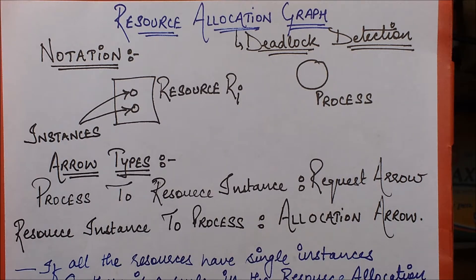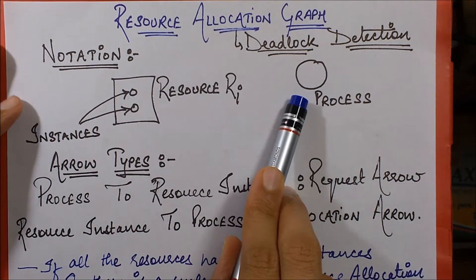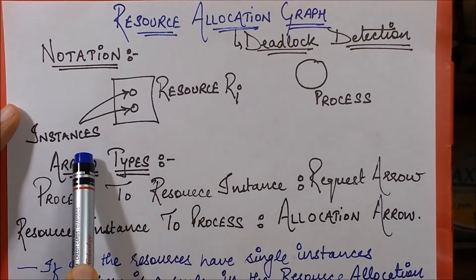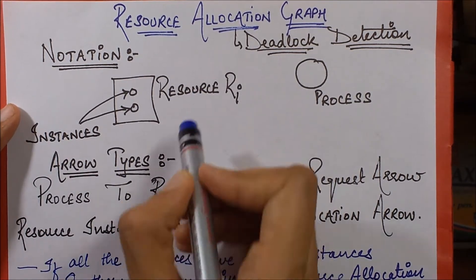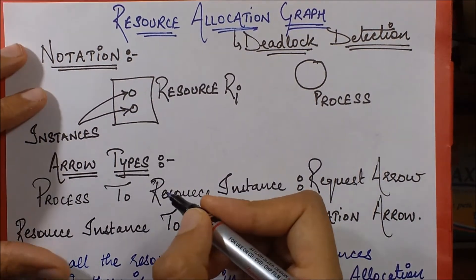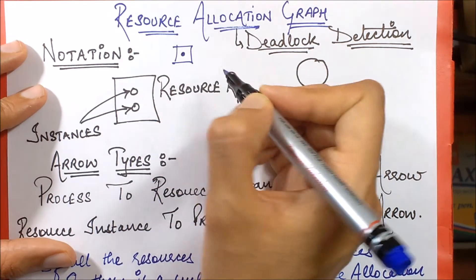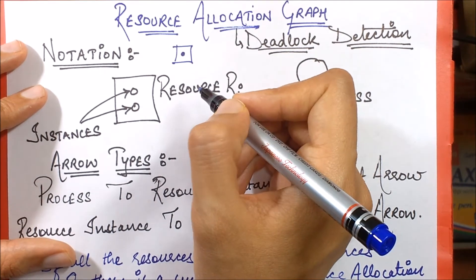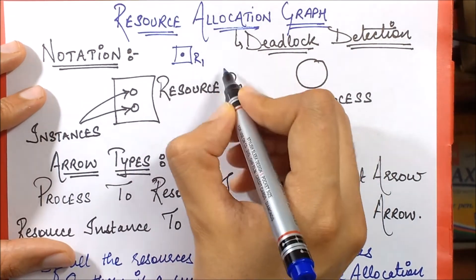Since it is a graph, it will have some arrows and some nodes. The nodes are basically represented as processes in the form of circles. There are also resource instances — if I have a single resource R1, I represent it as a rectangle. If I have only one instance of R1, I represent it with a single dot; if I have two instances of R1, I represent it with two dots.